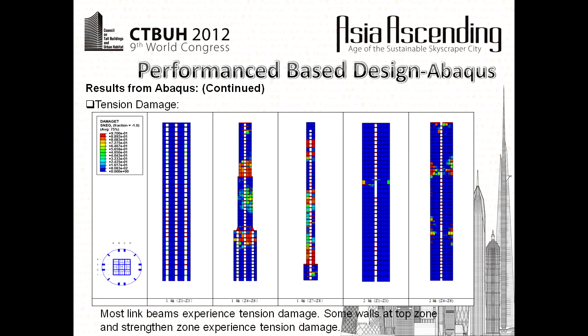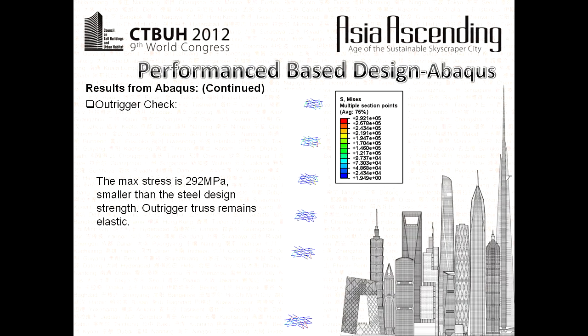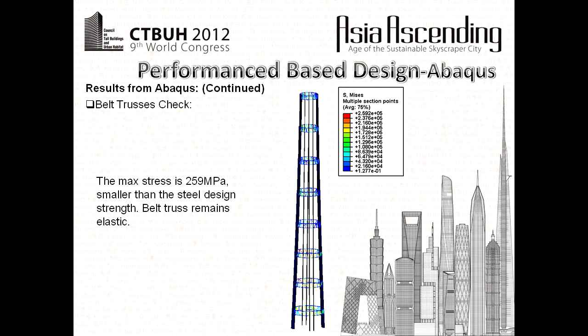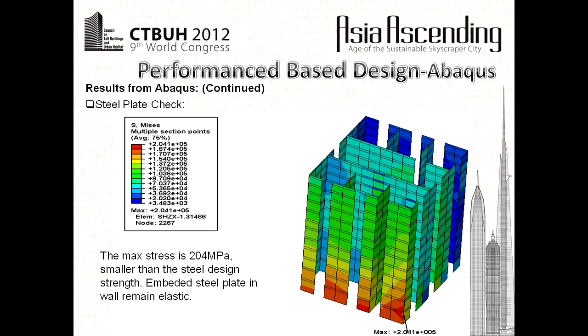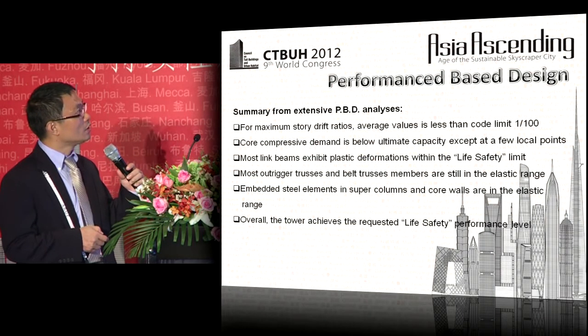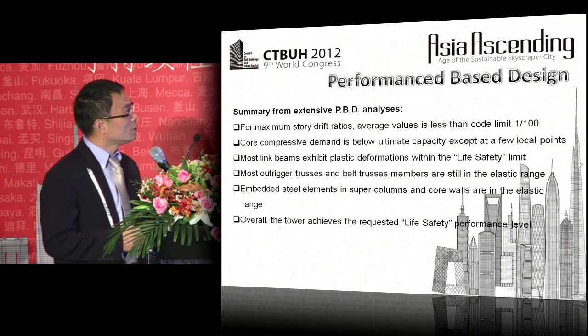Under tension, most coupling beams experience tension damage, and some walls at the top zone and strengthened zone also experience tension damage. For the outrigger trusses, the maximum stress is 292 MPa — smaller than the steel design strength — so the outrigger truss remains elastic. The belt truss maximum stress is 259 MPa, also smaller than the steel design strength, so the belt truss remains elastic. The embedded steel plate in the wall also remains elastic.